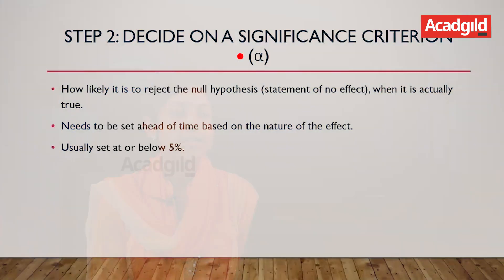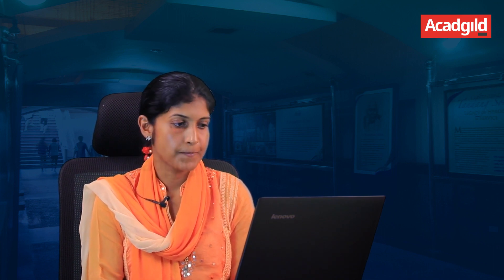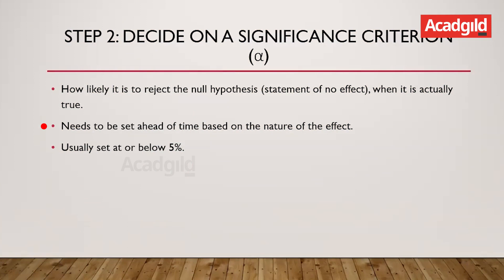Step two of hypothesis testing is to decide on a significance criterion, denoted by the letter alpha. It is the likelihood of us rejecting the null hypothesis when it is actually true. In our dentist example, if we conclude that there is an improvement in oral health when actually there is no improvement, the likelihood of this occurring is denoted by alpha — the likelihood of observing an effect when there is no effect.